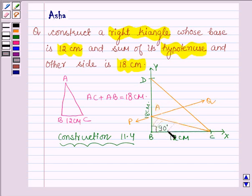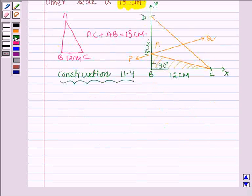So this is the required triangle ABC such that AB plus AC is equal to 18 cm and the base is 12 cm. Now let us write steps of construction and side by side construct the triangle.